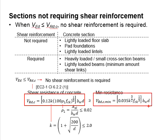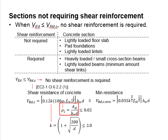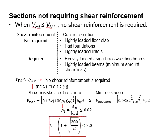The minimum resistance of the concrete is given here. The shear resistance of the concrete is a function of k and also ρ1. ρ1 represents the amount of reinforcement bar provided over the section area.